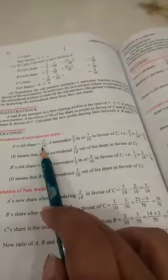A's old share is 7/10. A surrenders 2/7 of 7/10, means of his share. So 2/7 of 7/10, we will get the value 2/10. It means A surrenders 2/10 out of his share in favor of C.